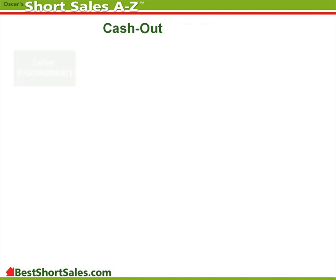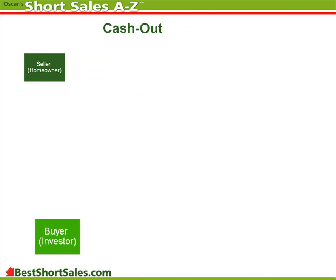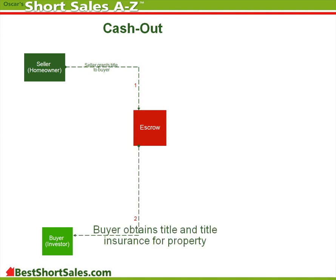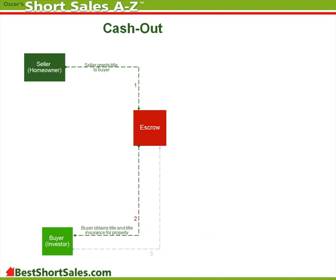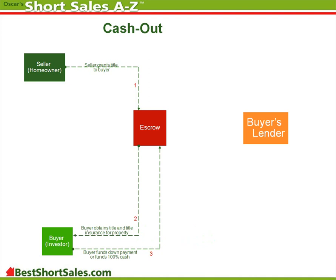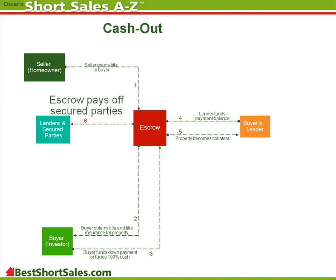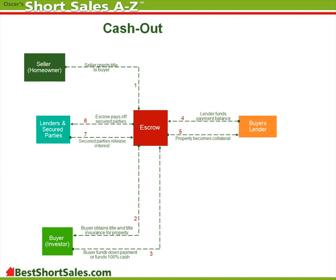This is how a cash out works. The seller is the homeowner. The buyer is an investor or someone that wants to buy at a good price. The seller grants title to the buyer through escrow. Through escrow, the buyer obtains title and title insurance for the property. The buyer funds a down payment or funds 100% cash. The buyer's lender funds the payment balance. Also through escrow, the property becomes collateral. With those funds, escrow pays off the lenders and other parties secured by the property. Then the secured parties release their security interest in the property.